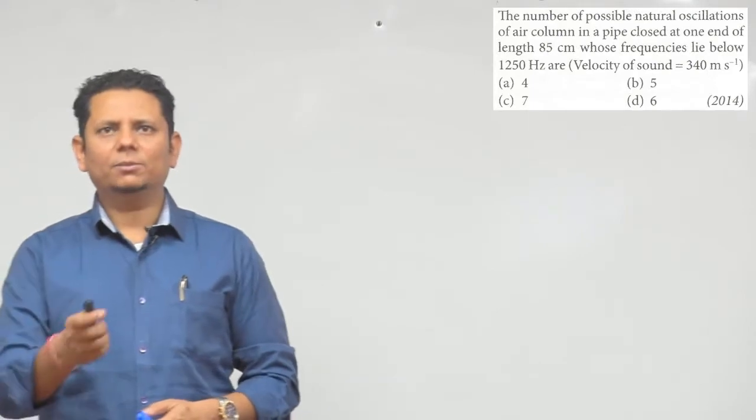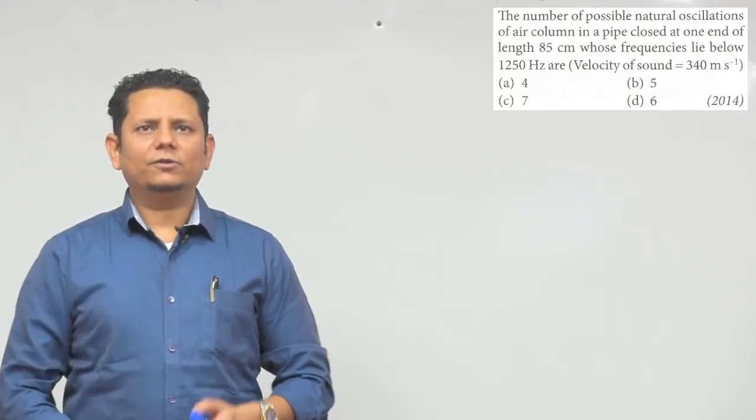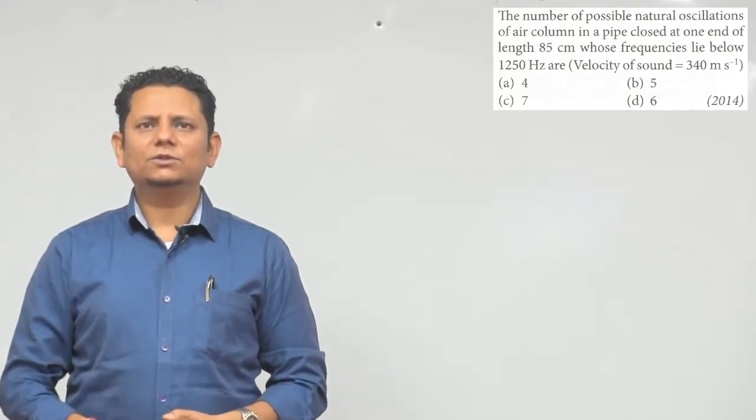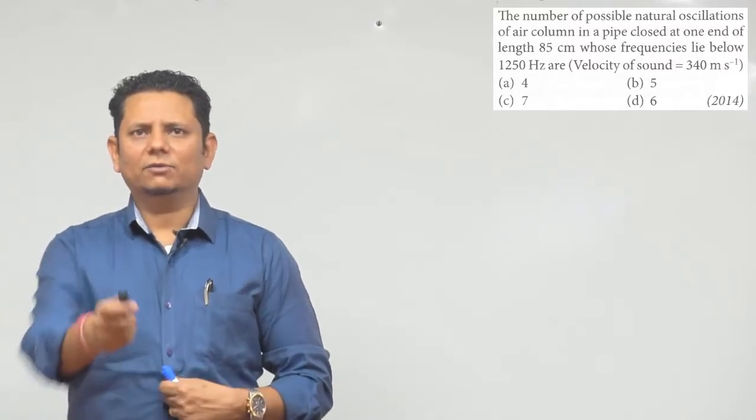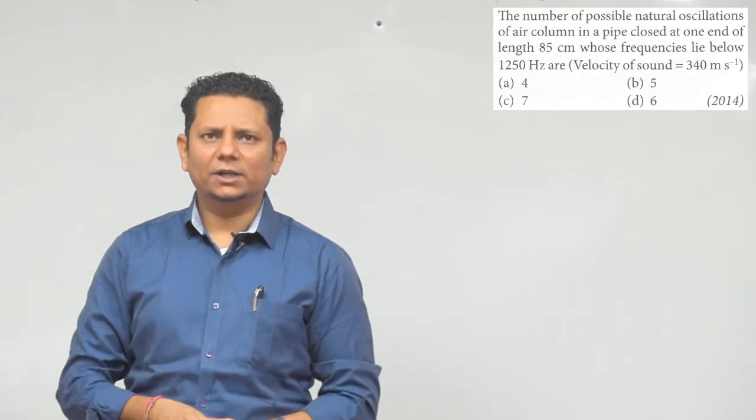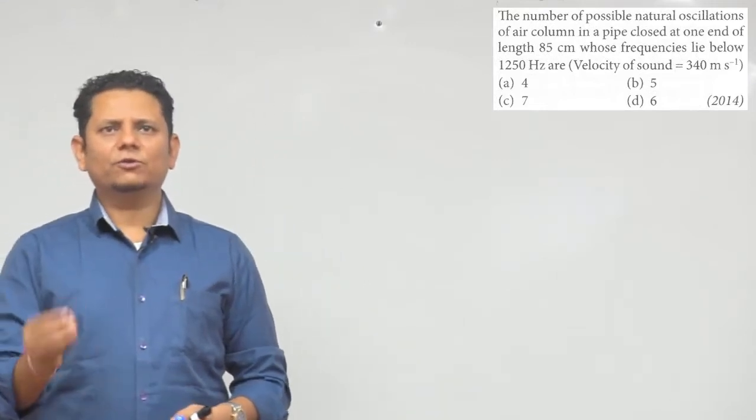Next question. The question says the number of possible natural oscillations of air column in a pipe closed at one end of length 85 cm whose frequencies lie between 1200 Hz. Velocity of sound we have suggested 340 we can take. Options are 4, 5, 6, or 7.